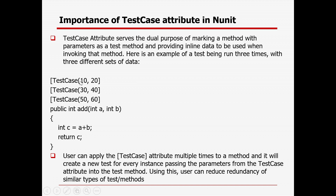With TestCase, you pass arguments — if you have two variables, you pass two arguments that map to integer A and integer B respectively. For the first iteration it will call 10 and 20, giving result 30; for the second it will call 30 and 40, giving 70; and for the third iteration, 50 plus 60 equals 110.